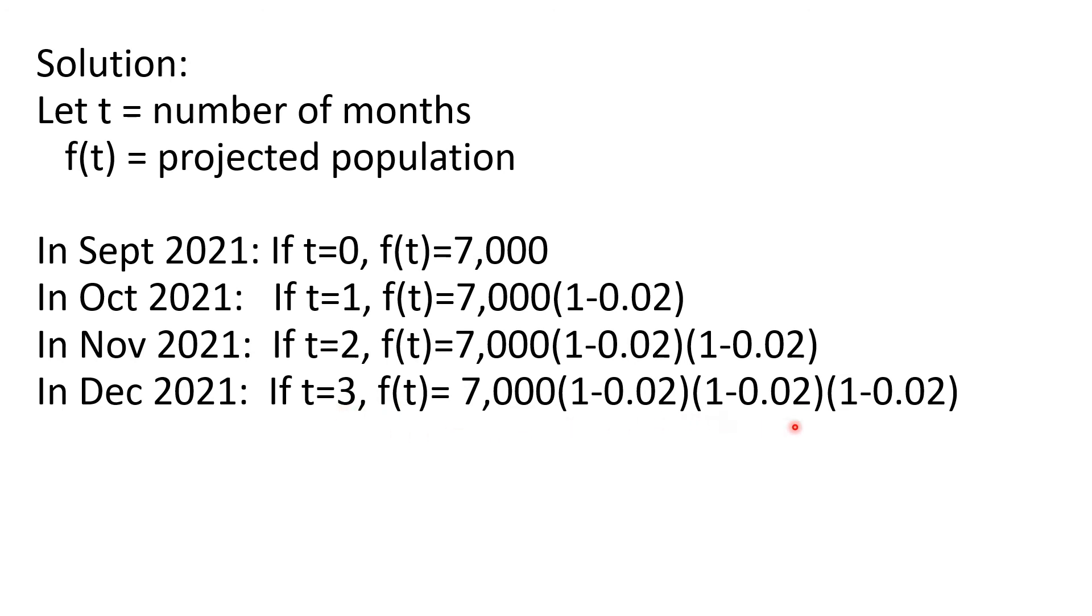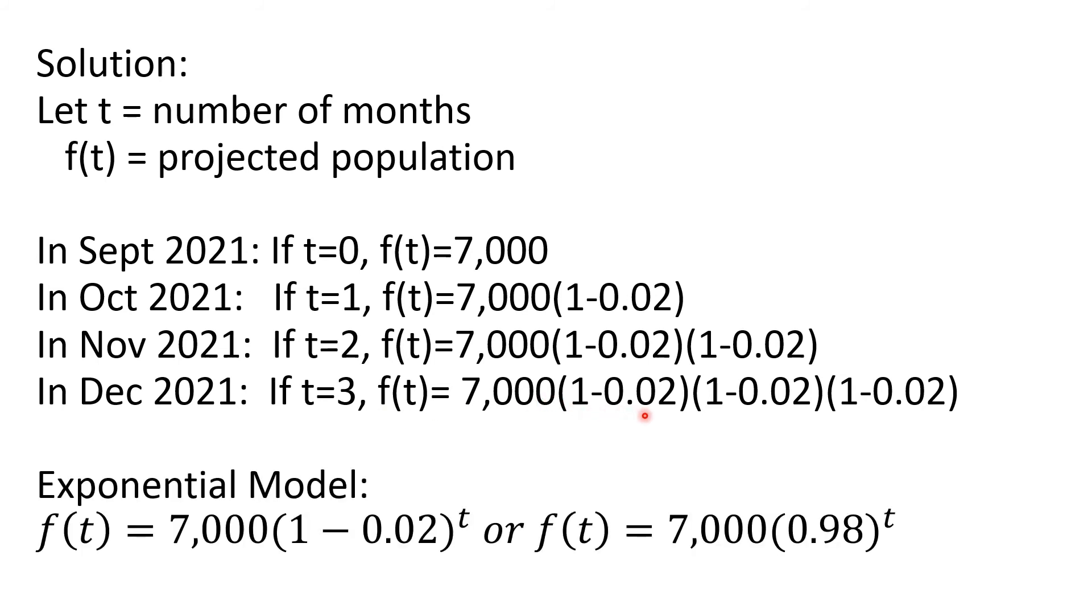Notice that there is a pattern between the value of T and the number of times 1 minus 0.02 is being multiplied by 7,000. If T is equal to 1, 1 minus 0.02 is used as a multiplier once. If T is equal to 2, that factor is used twice. If T is equal to 3, 1 minus 0.02 is a factor thrice.